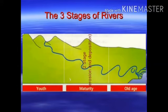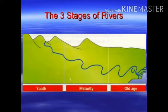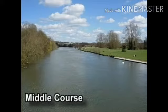In the second stage, the middle or maturity stage, the river has more energy as well as a high volume of water as it enters the plain area. It becomes wider also. Here, the river performs both erosional and depositional work.